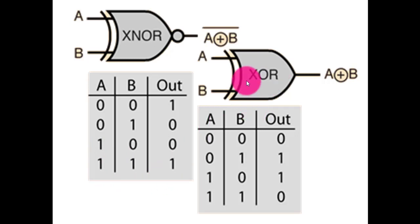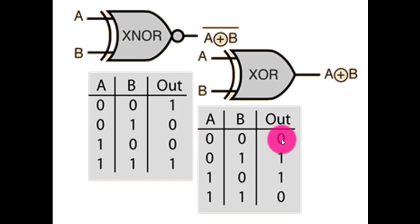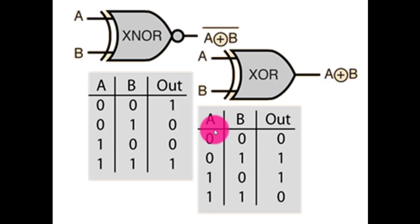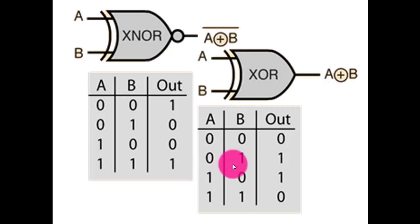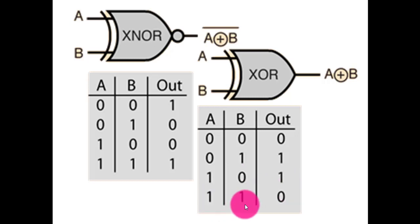On the other hand, in case of the exclusive OR gate, the phenomena is a bit different. When the inputs are same, the output will be zero, and when the inputs are different, the output will be one. So when A and B are zero, the output is zero. When A and B are different — zero-one or one-zero — the output is one, and at one-one it gives zero because the inputs are same.